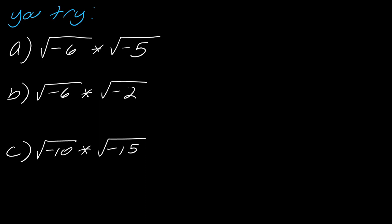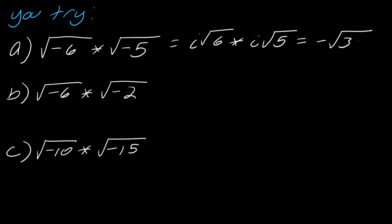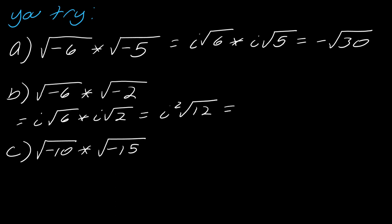Go ahead and try these and hit play when you're ready. For the first two: i times the square root of 6 times i times the square root of 5 gives the negative square root of 30, by similar reasoning to the last one. For b: I've got i times the square root of 6 and i times the square root of 2, so I get i squared times the square root of 12. I can break this down — the square root of 12 ultimately gives me negative 2 times the square root of 3. You can break this down farther.